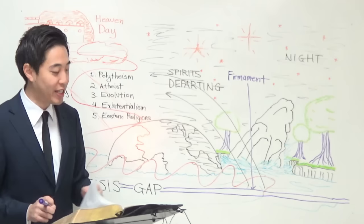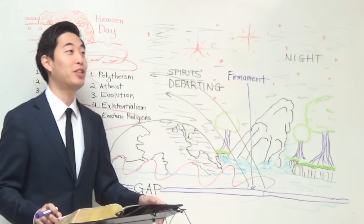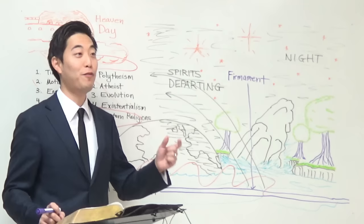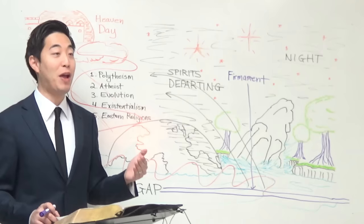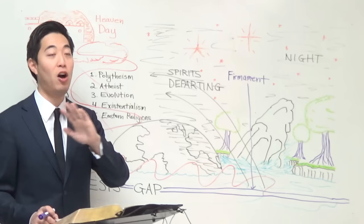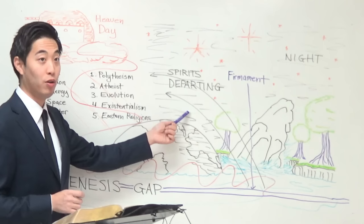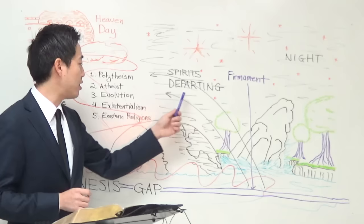Notice the Bible says "and it was so" — it didn't say "and it was good." Did you notice that? If you look at all the other days of creation, He says "it's good" — except the second day. Why did the Lord not say good? Because there's nothing good about the darkness here — the darkness is where God created something negative for the devil and his angels, who were reserved to chains of darkness.